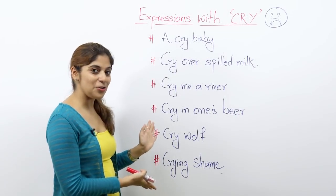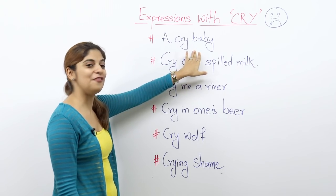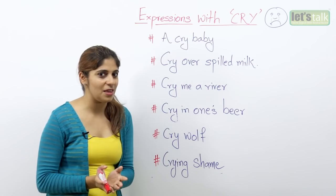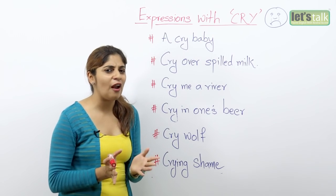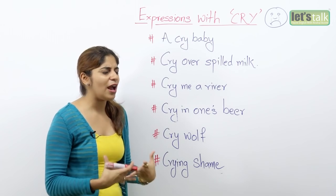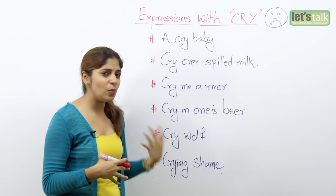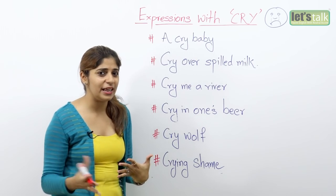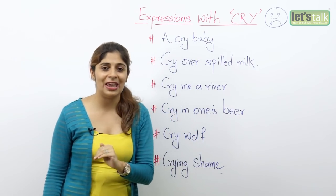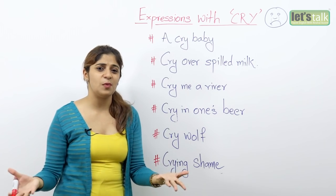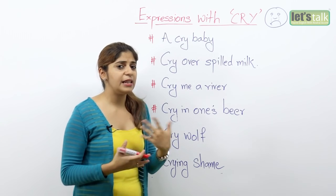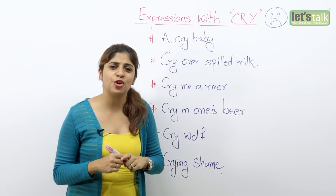There are six expressions here and let's look at the very first one: a cry baby. Now who is a cry baby? Well, someone who cries for anything and everything. Someone who cries on all silly matters, always whining, always complaining — that person is a cry baby. Especially kids. Have you ever noticed kids are always whining? If a child is not happy, he is always whining and complaining. So he is such a cry baby.